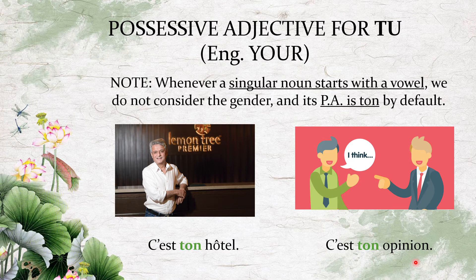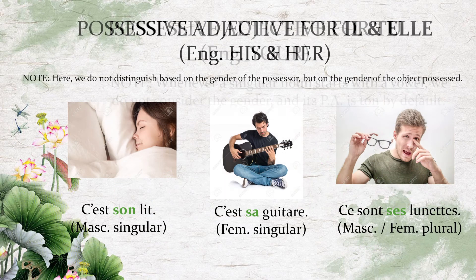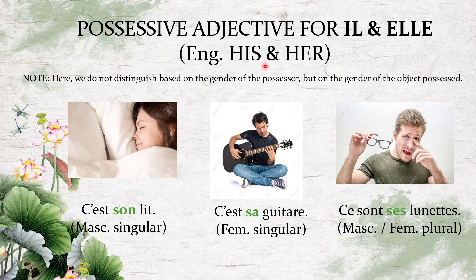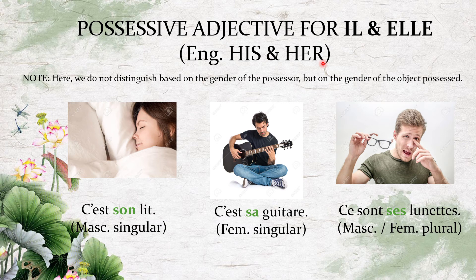The last set in this video is for 'il' and 'elle' — his and her. In English, 'his' is used when the possessor is male and 'her' when the possessor is female. But in French, the distinction is not based on the gender of the possessor — we are not bothered about whether it belongs to a man or a woman. Our concern is the gender of the object being possessed. So it doesn't matter who holds the object; what matters is the gender of what is being held.